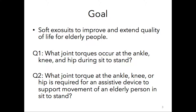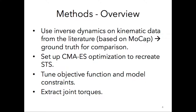The two questions I will strive to answer are: 1. What joint torques occur at the ankle, knee, and hip during sit-to-stand? 2. What joint torques at the ankle, knee, or hip are required for an assistive device to support movement of an elderly person in sit-to-stand?